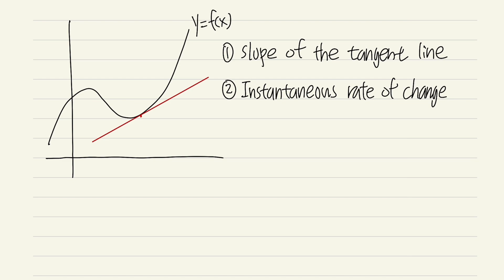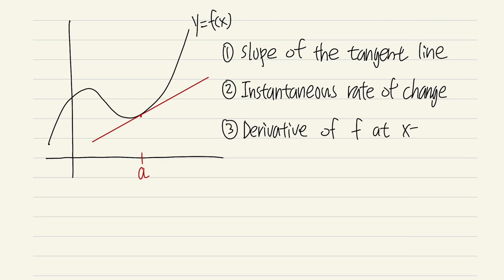Number three is the biggest topic of Calc 1. Let's say we are at some value a. When we find the slope of the tangent line or the instantaneous rate of change, what we are really doing is finding the derivative of our function at some value a, at x equal to a. Keep these three things in mind — they are all related; in fact, they are pretty much all the same.